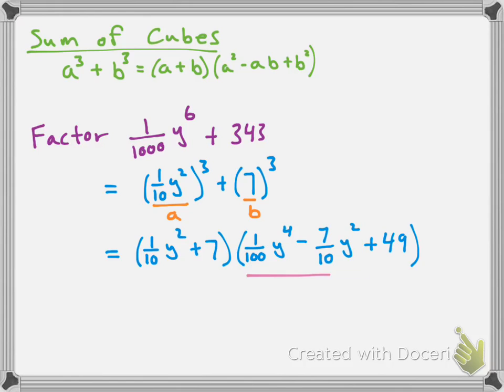And then we have plus b squared. So that's going to be plus 7 squared, which is plus 49. And once again, this last factor here, that's not factorable. We can't really do anything else with that, so we just sort of leave it. So guys, that's been a difference and sum of cubes. Take care.